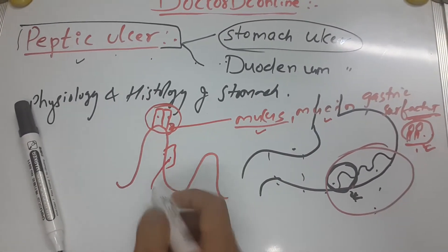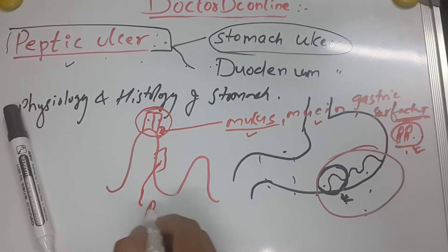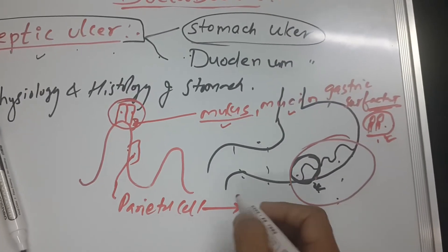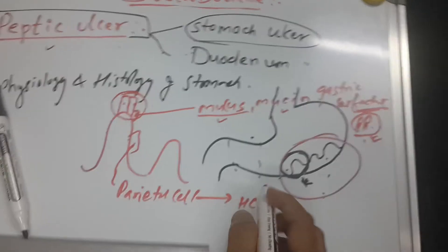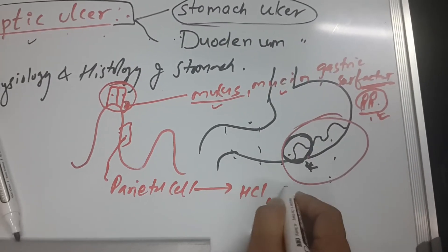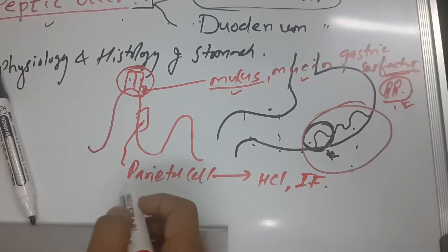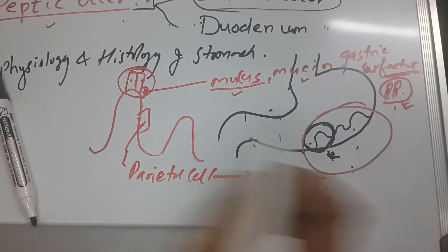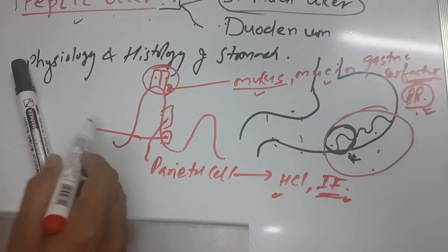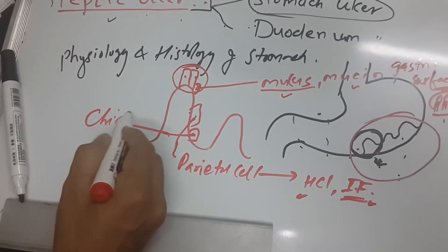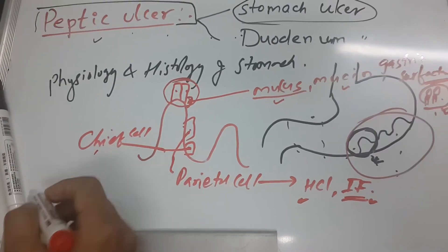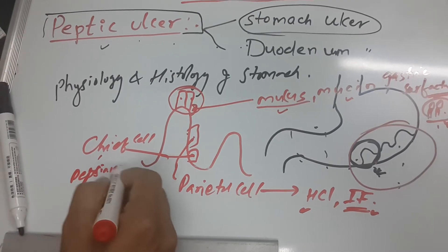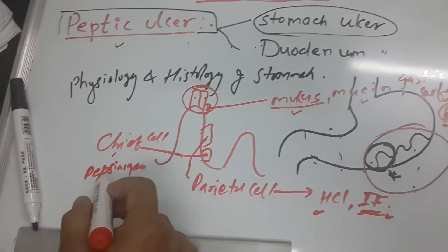Another important cell in the gastric pit is the parietal cell. The parietal cell's main functions are production of acid (HCl/protons) and intrinsic factor. Also present are chief cells, whose main function is to secrete pepsinogen, which is a protease — a protein-breakdown enzyme.